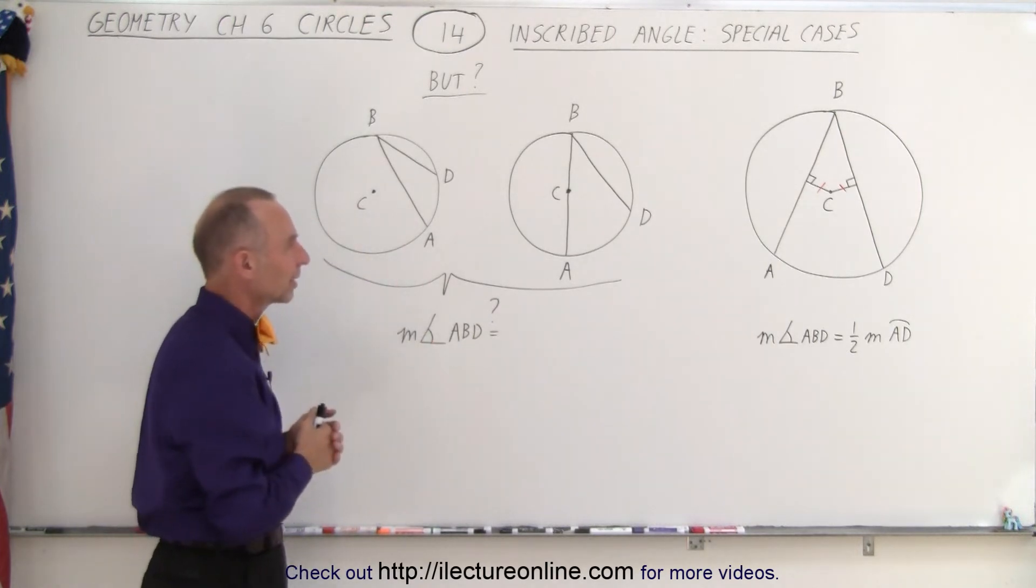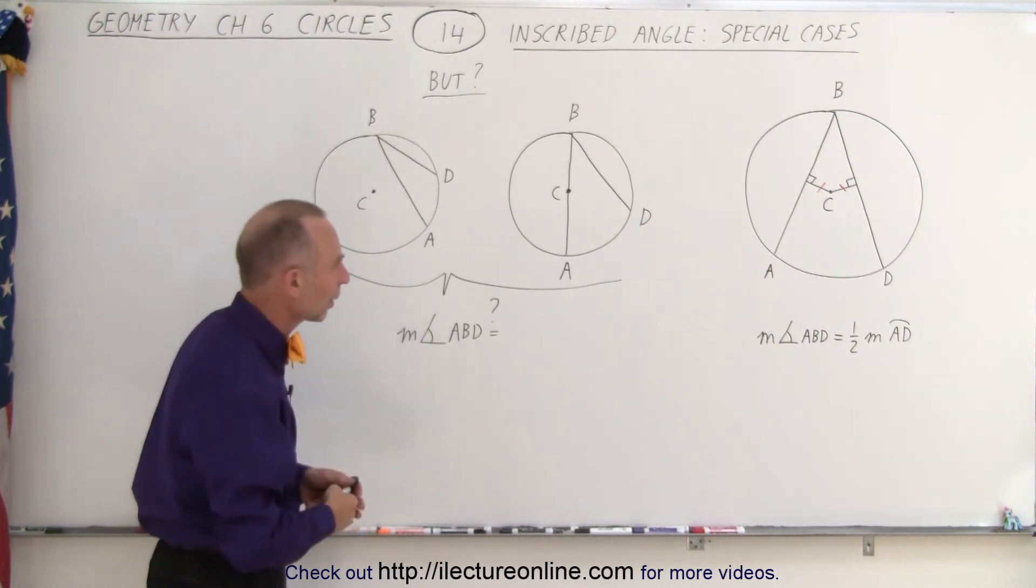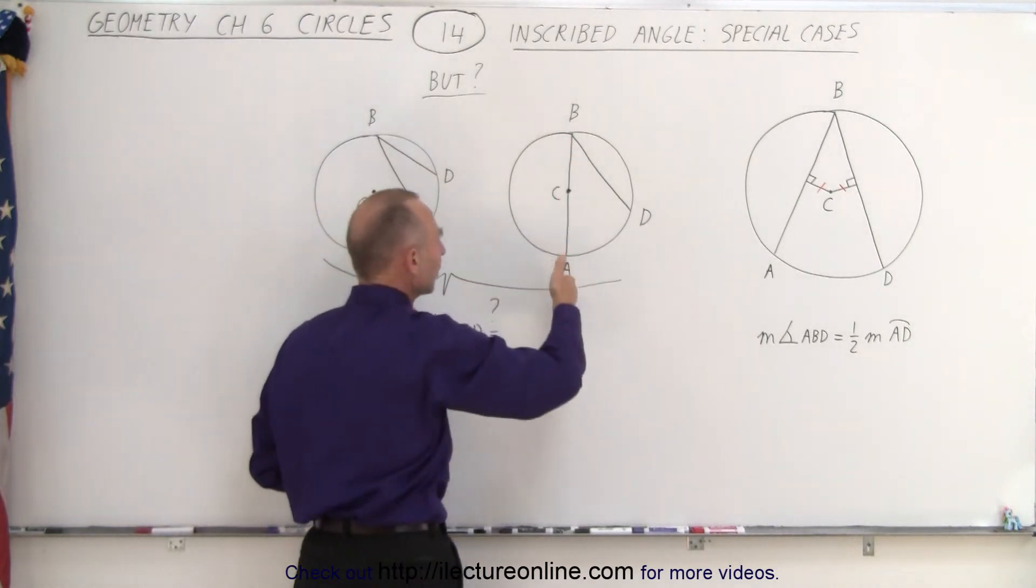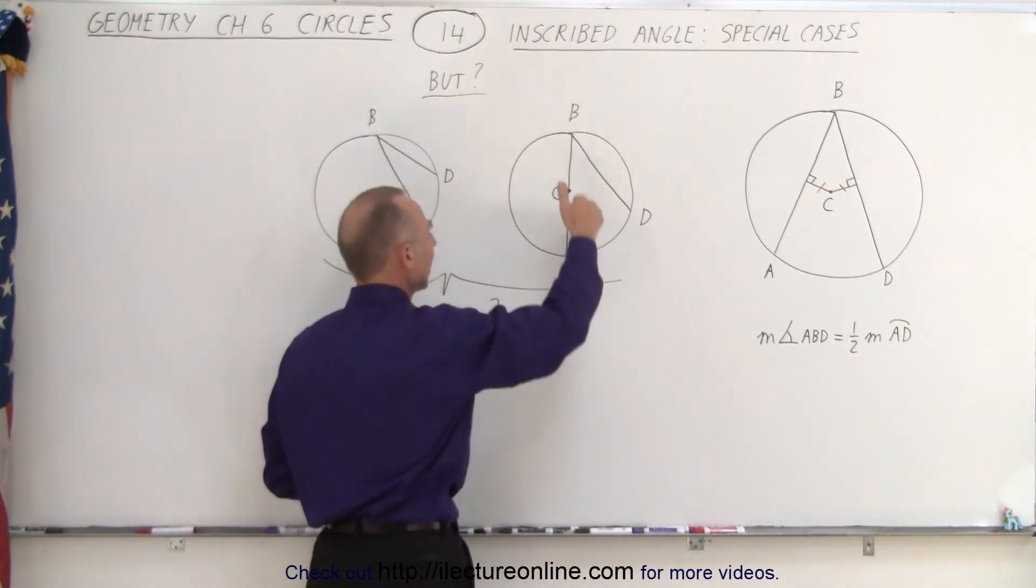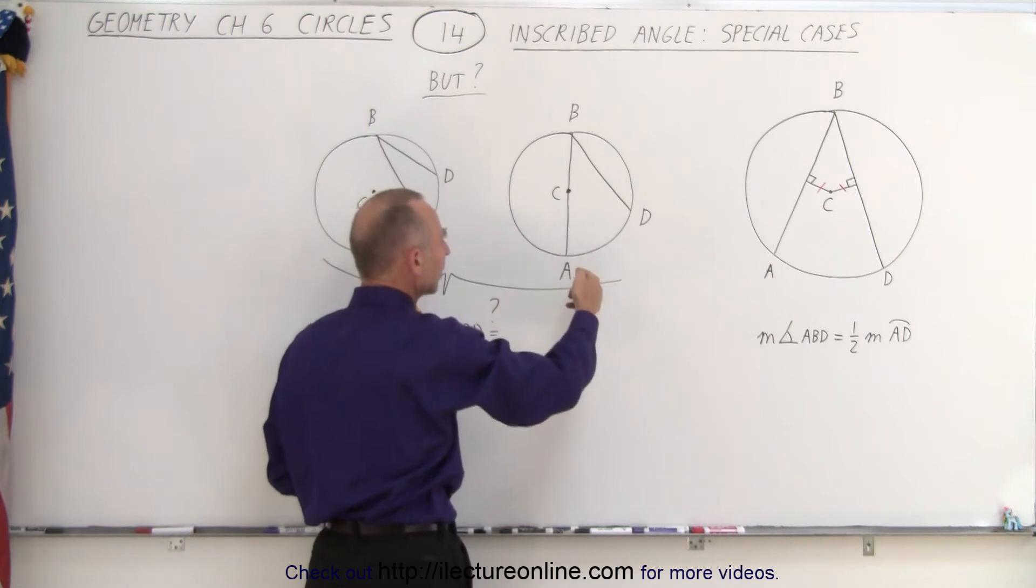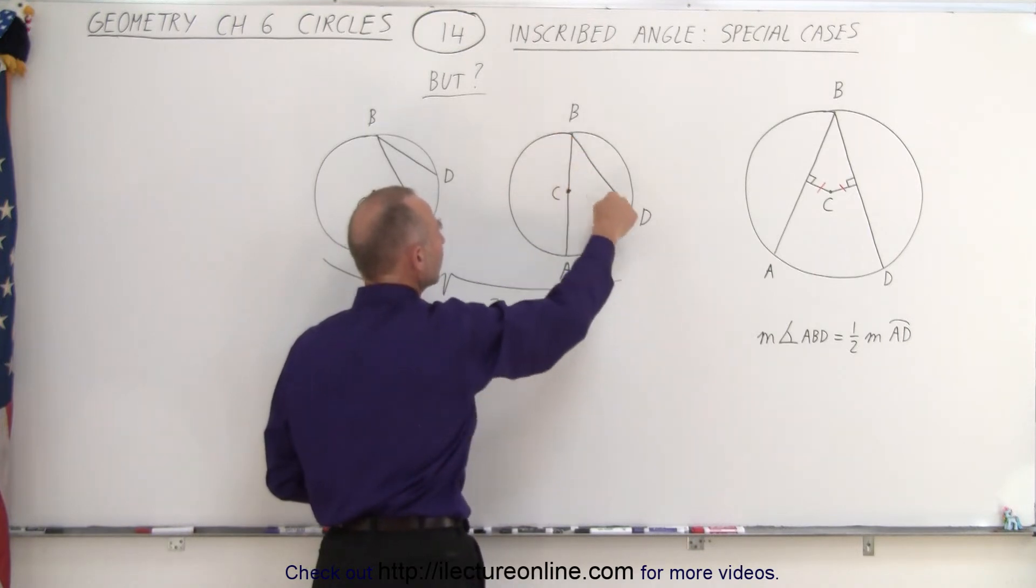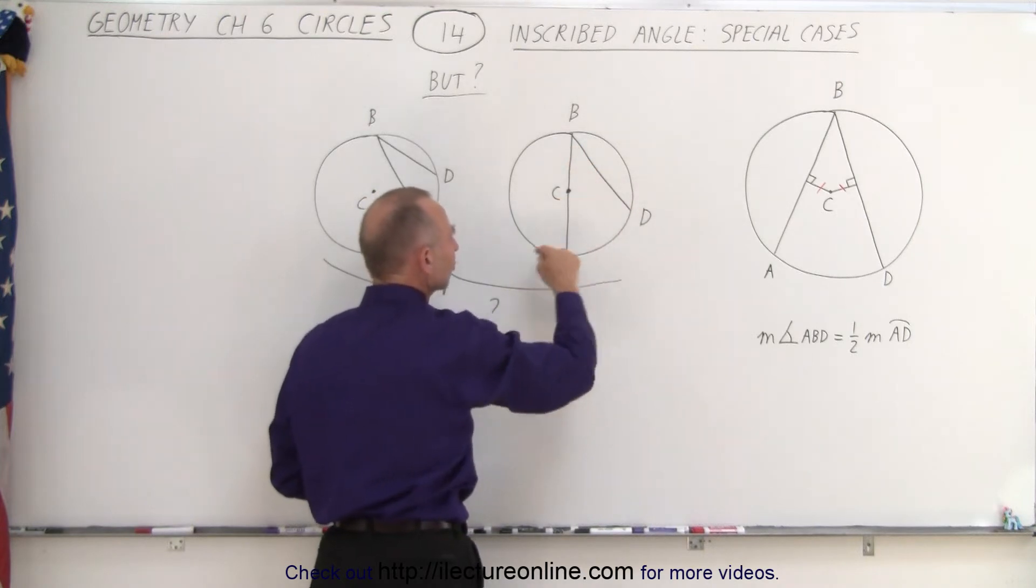But what if we have special cases like this? What if it's off-center? What if we have one of the chords equal to the diameter of the circle and here have another chord, and we again have the angle measure from A to B to D, is that angle measure still one-half the intercepted arc?